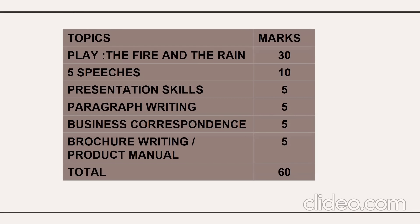Before we start, let's look at what the syllabus covers. You have a 60-mark question paper divided as follows: the play The Fire and the Rain, also known as Agni Matu Malae, written by Girish Karnad, carries 30 marks — 50% of your paper. Then you have five speeches worth 10 marks, presentation skills for 5 marks, paragraph writing for 5 marks, business correspondence for 5 marks, and brochure writing or product manual for 5 marks.